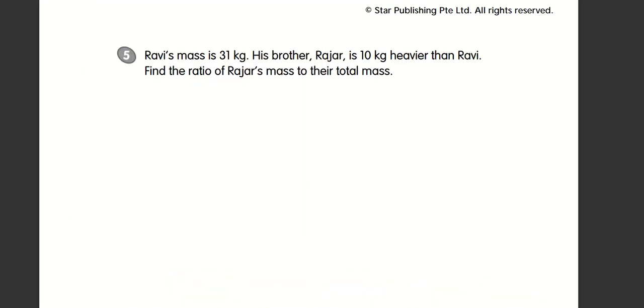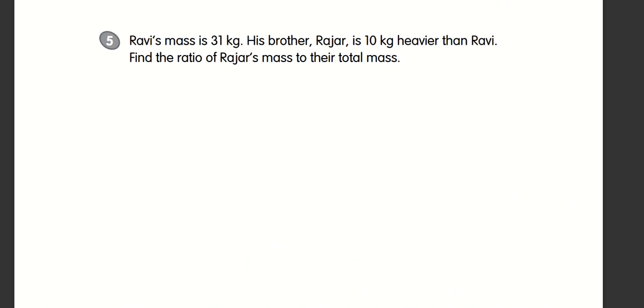Ravi's mass is 31 kilograms. His brother, Raja, is 10 kilograms heavier than Ravi. Find the ratio of Raja's mass to their total mass.